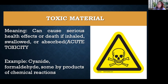We also have a sign for toxic materials — you can see the skull and crossbones. This usually indicates that those substances can cause serious health effects or death if inhaled, swallowed, or absorbed; this is called acute toxicity. Examples include cyanide, which is very dangerous, formaldehyde, and some byproducts of chemical reactions. That is why sometimes you see somebody working on something and they suddenly faint — most probably they have inhaled fumes that caused some sort of toxicity.